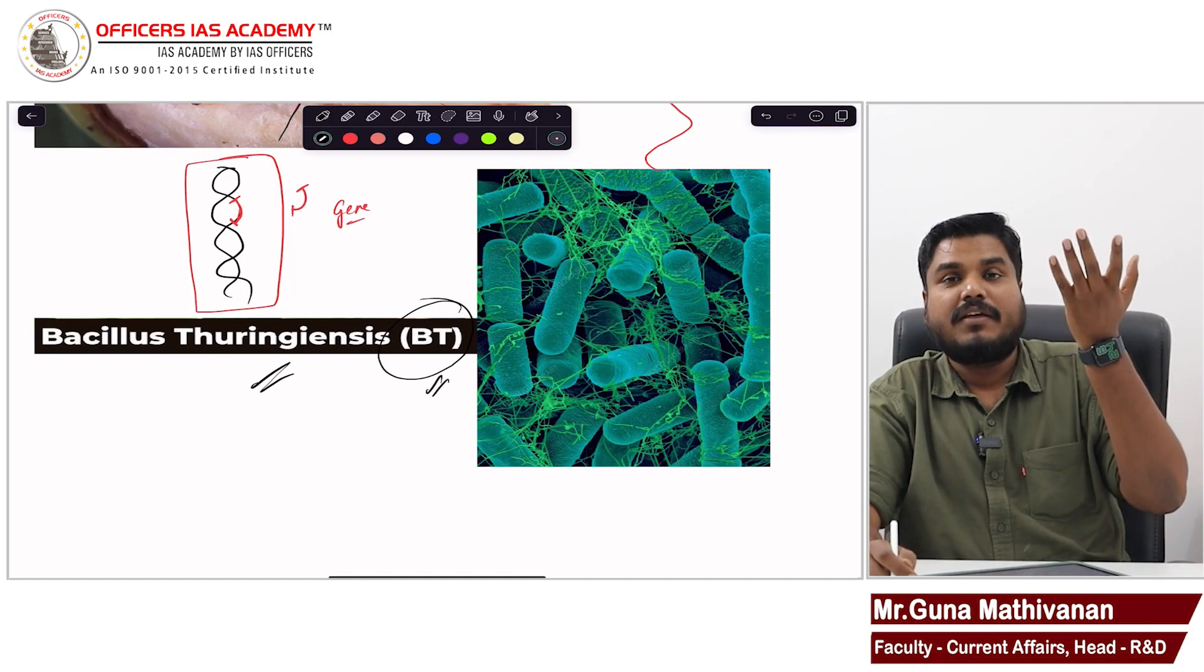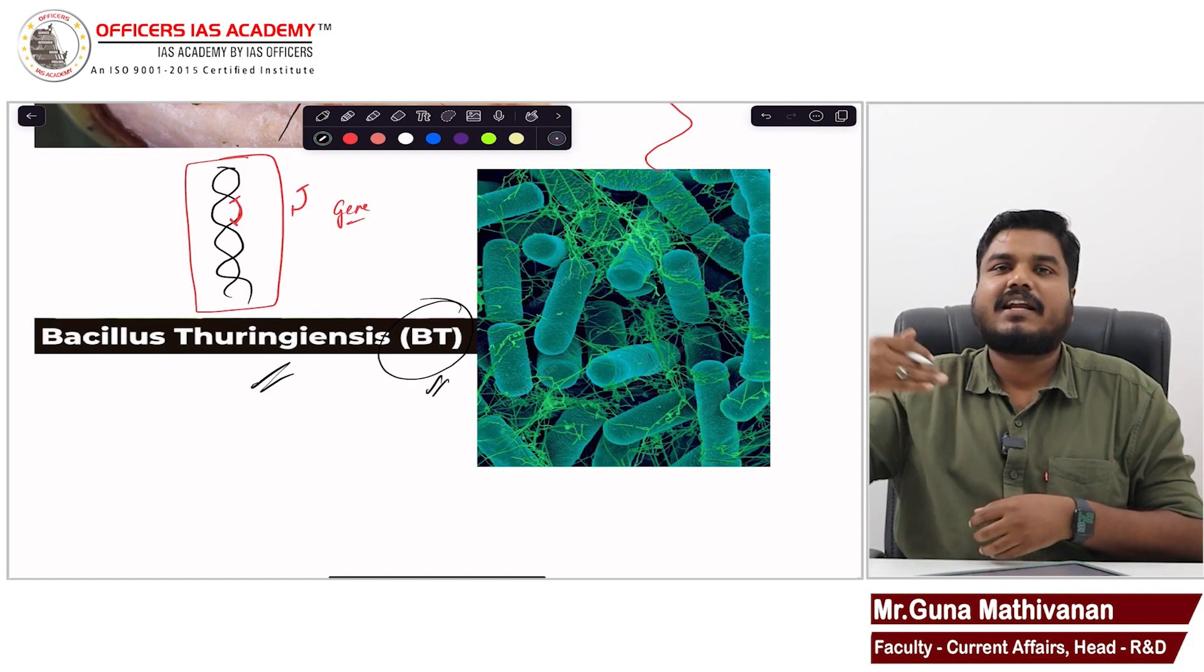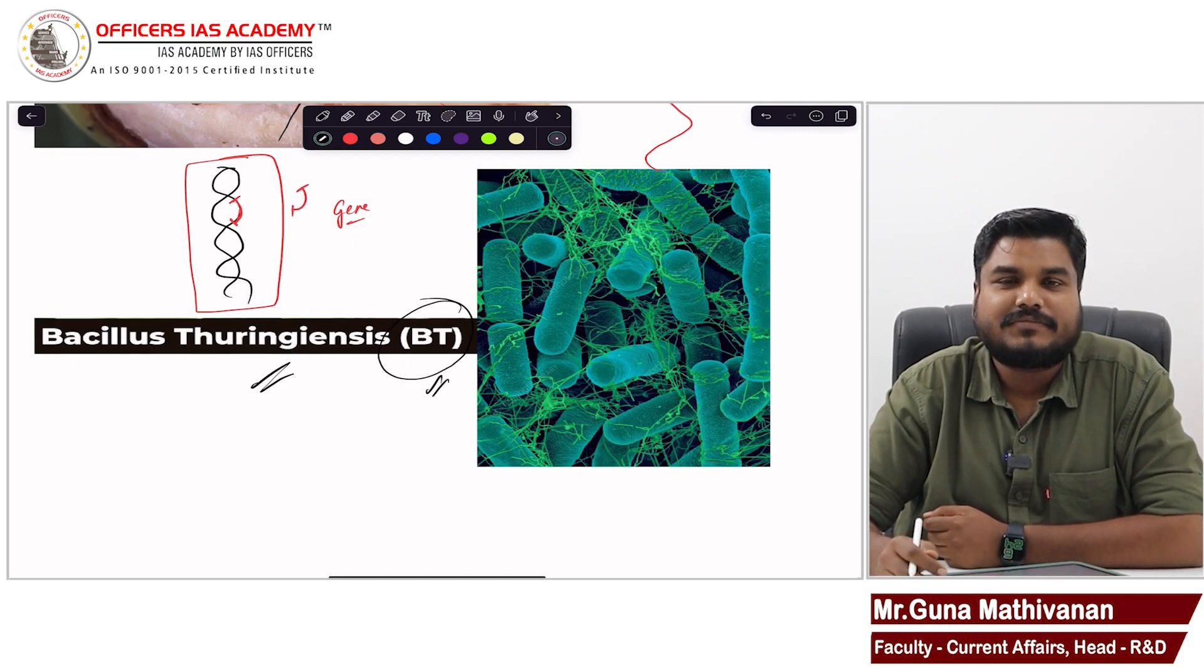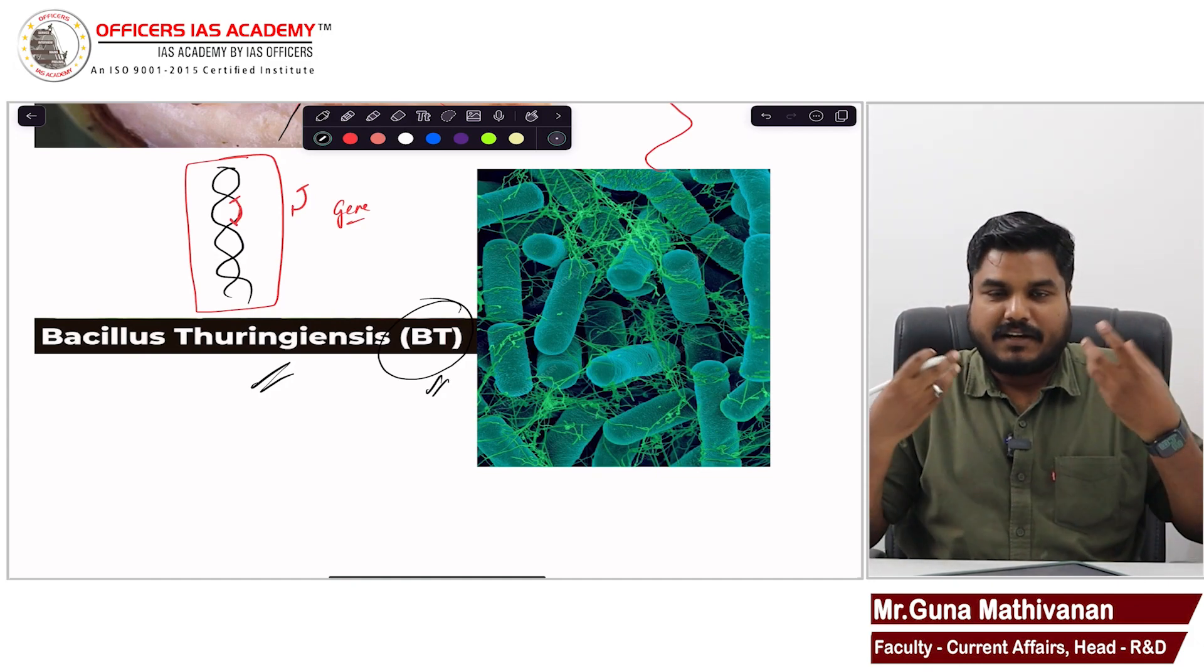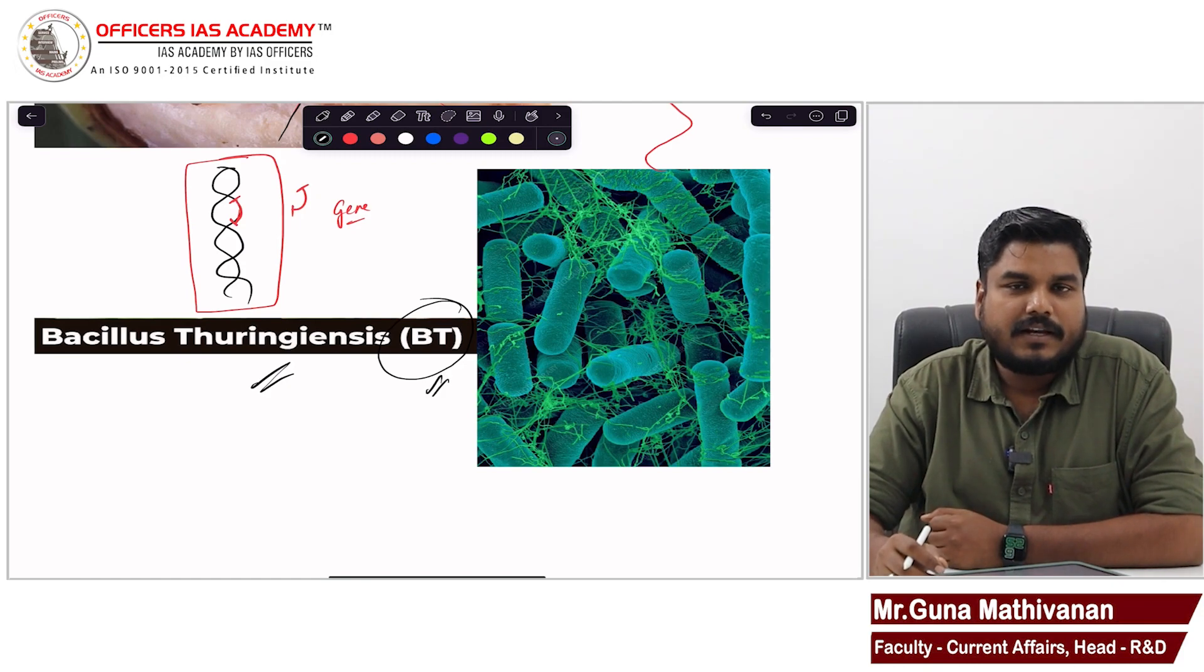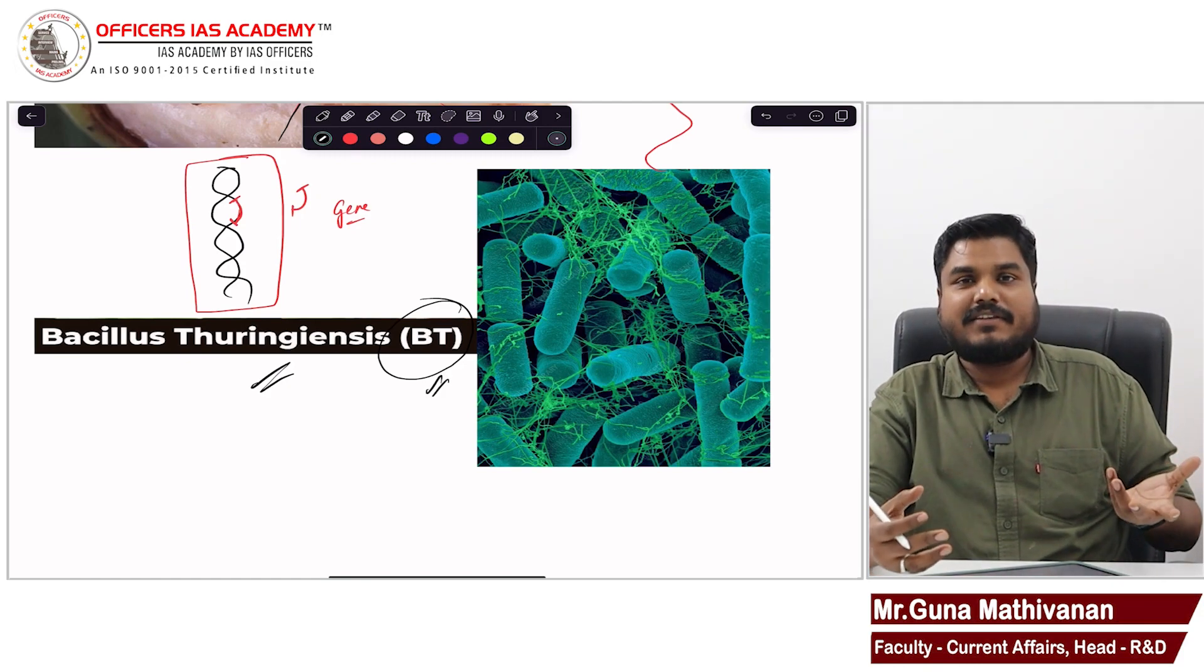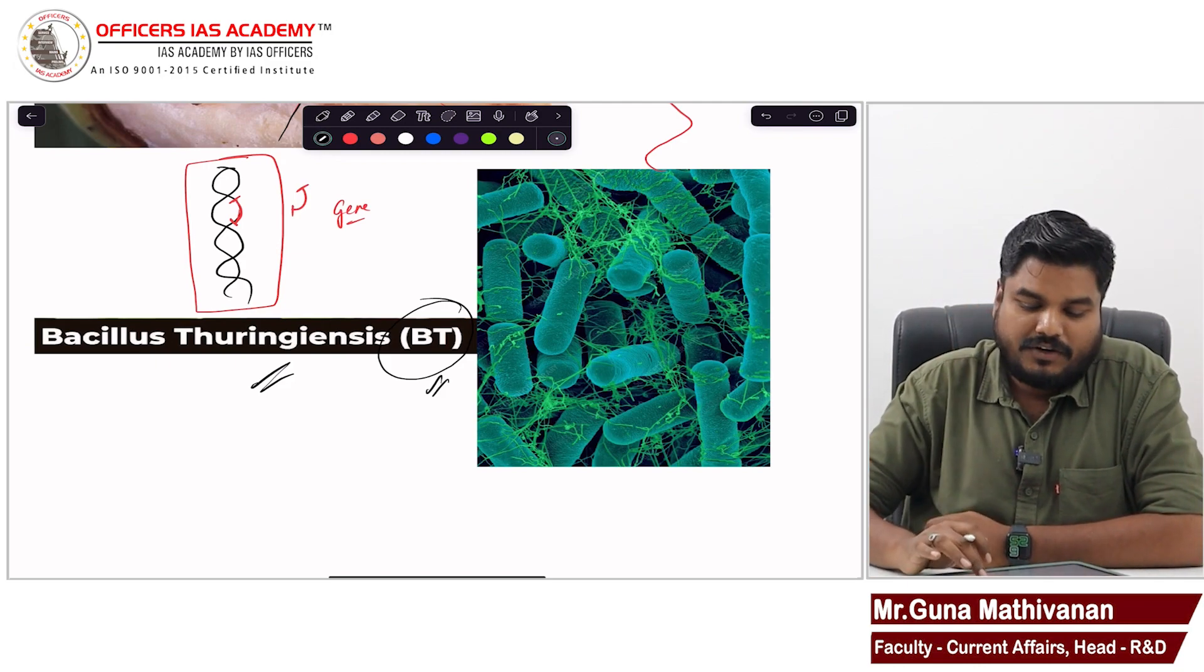So American company, they developed a new cotton seed. That cotton seed, if you grow, that cotton will be more stronger. It can withstand the attack from the pink bollworm. So cotton will be protected, farmers will be protected. Farmers can get more yield and they can make more money. Idea is great.